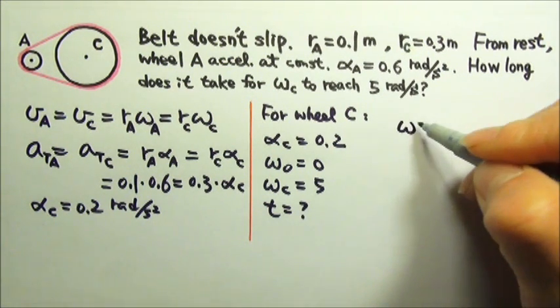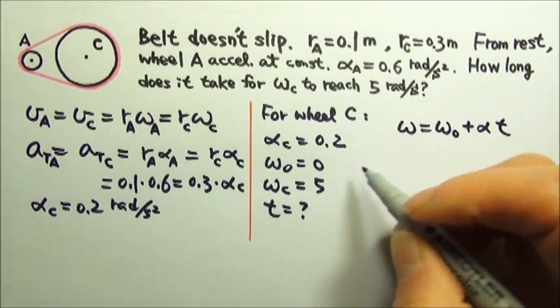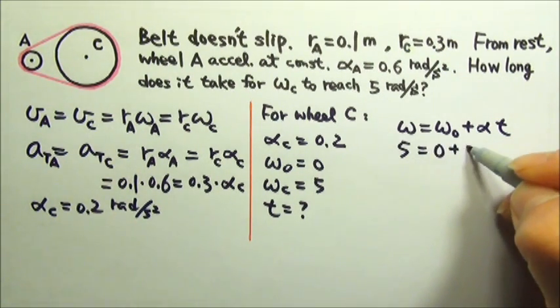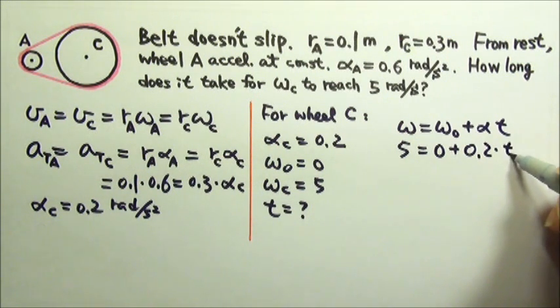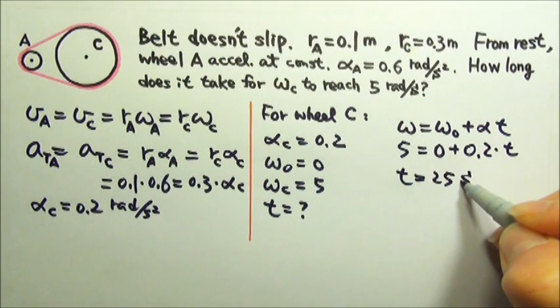It's omega equals omega naught plus alpha T. The final velocity is 5. The initial velocity is 0 plus 0.2 times T. So we should find the time to be 25 seconds.